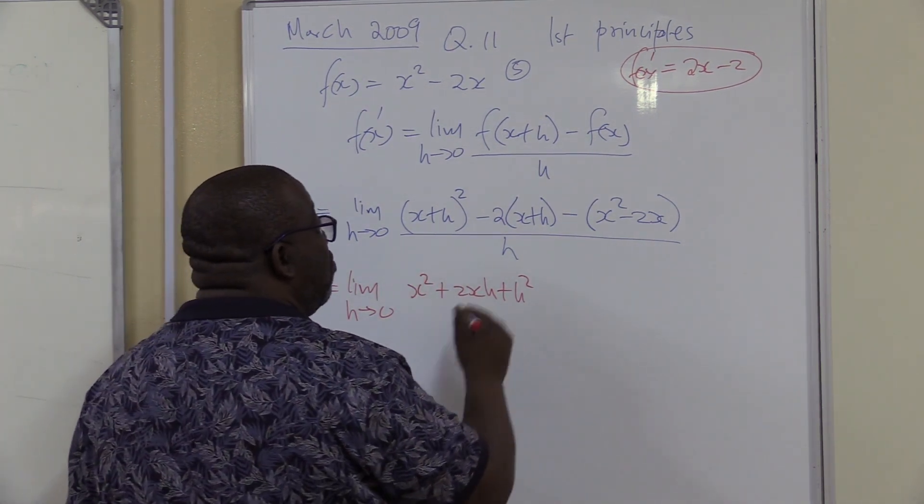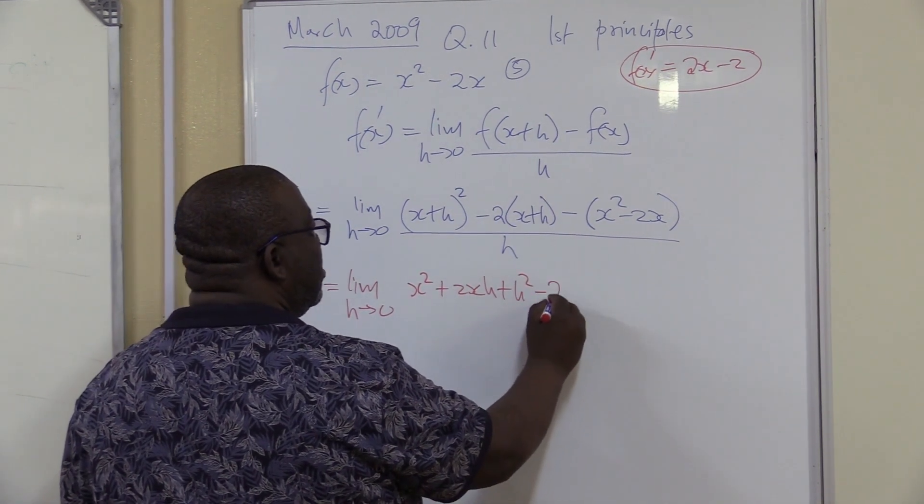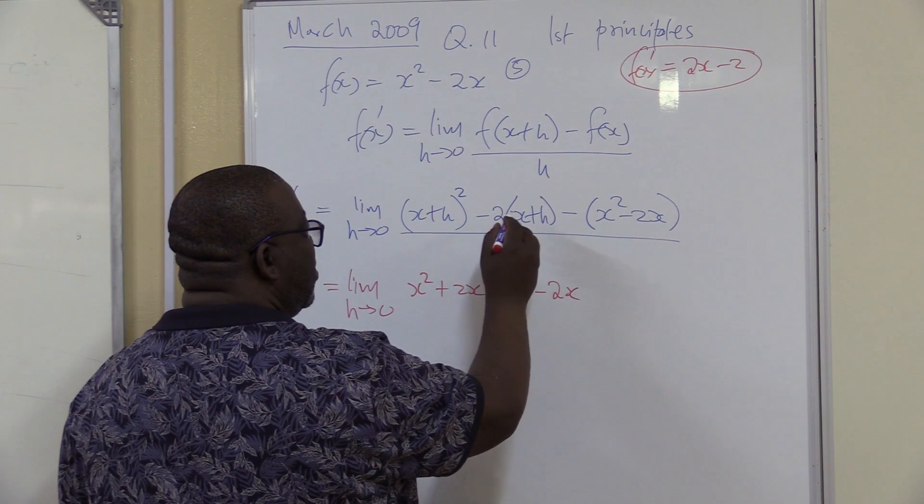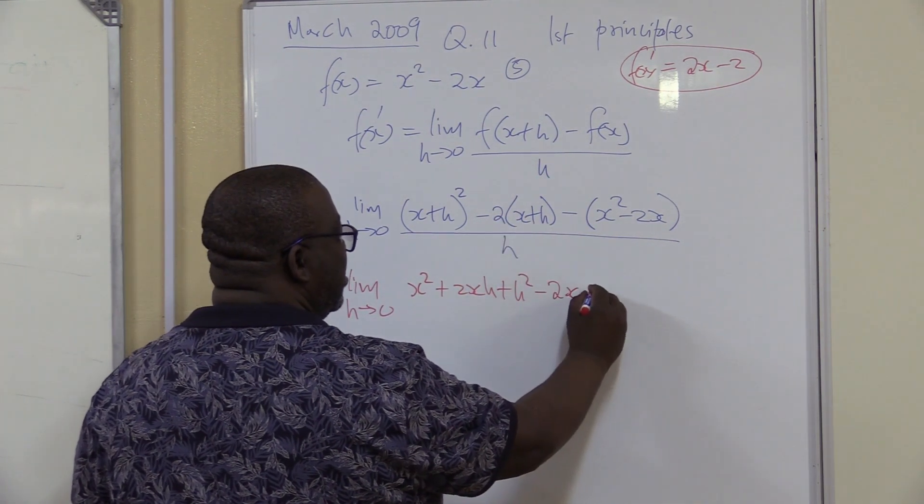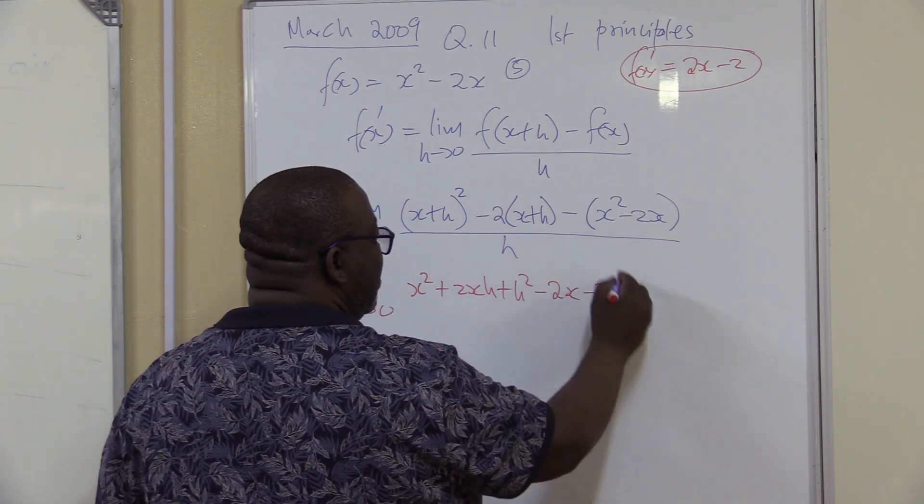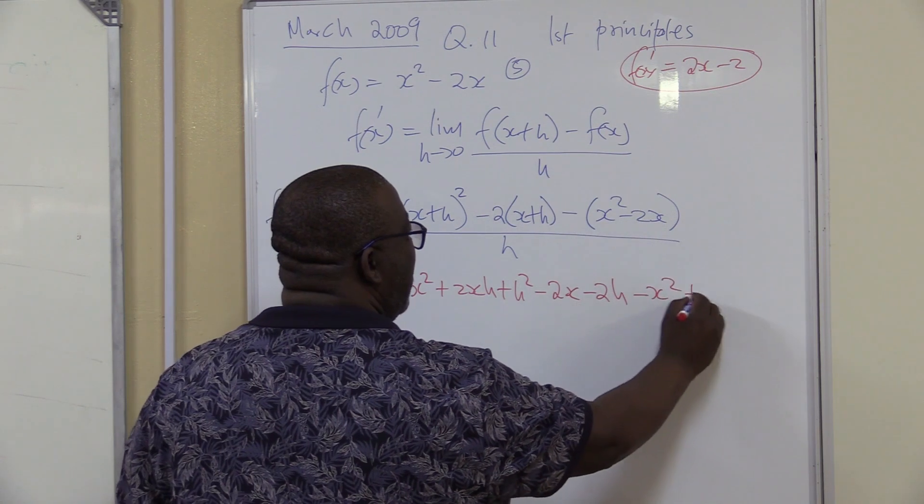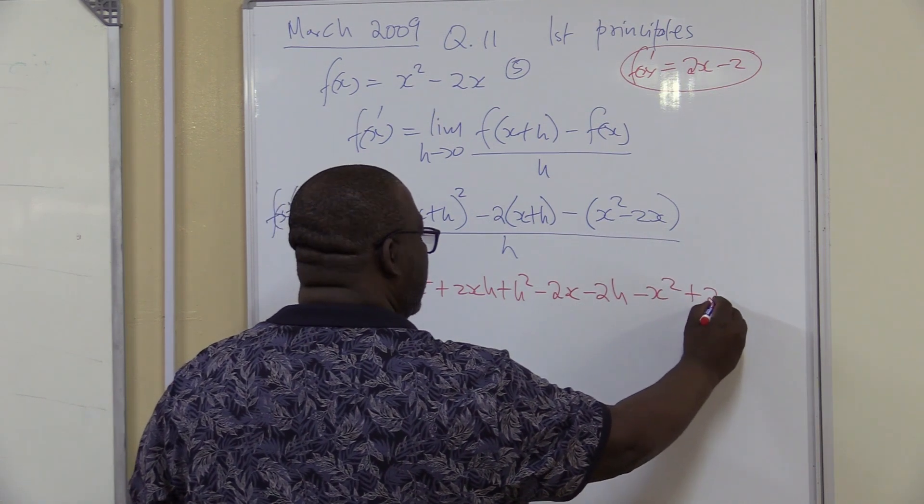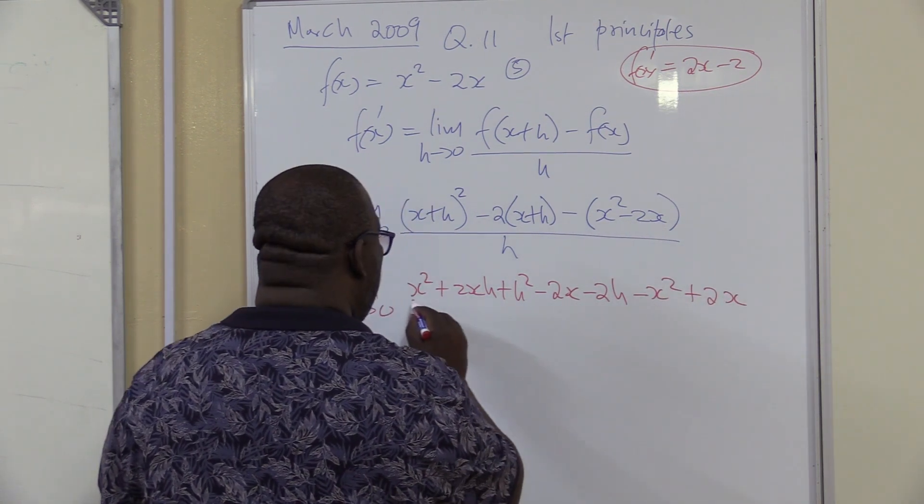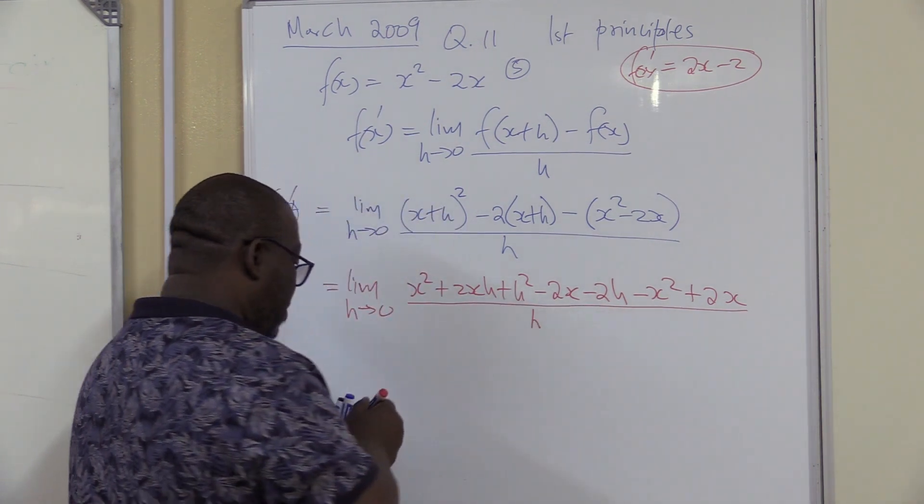Let's move on to this next one. We break this bracket so it's minus times that, it's going to be minus 2x. Minus 2 times h, it's going to be minus 2h. We break this bracket as well. It's going to be minus times that, it's going to be minus x². This times this, it's going to be plus 2x. This is all over h.